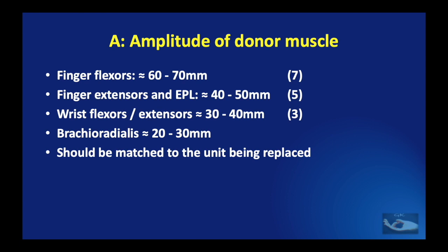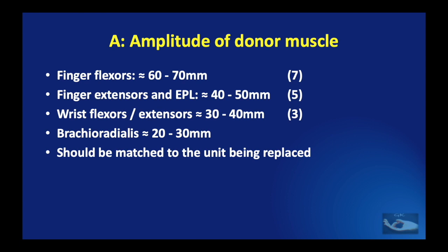It is easy to remember the 7-5-3 rule: the finger flexors have an amplitude of approximately 7 cm; the finger extensors and extensor pollicis longus have an amplitude of about 5 cm; and the wrist flexors and extensors have an amplitude of about 3 cm. The brachioradialis has an amplitude of about 20-30 mm. We need to remember this when matching a muscle to be transferred to the unit that it is going to replace.